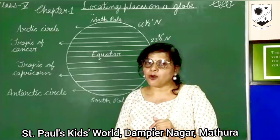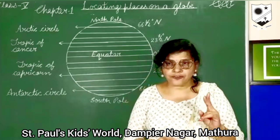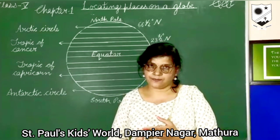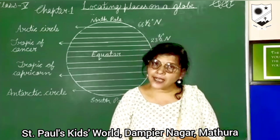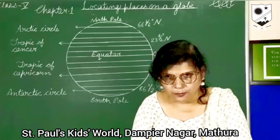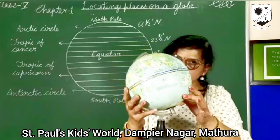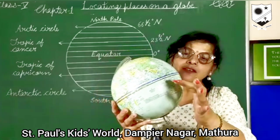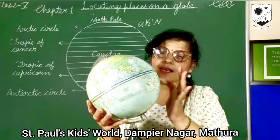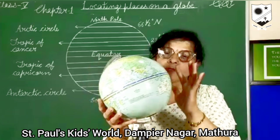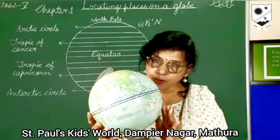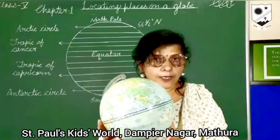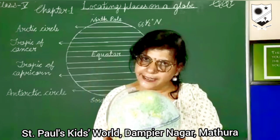This grid is made up of two sets of imaginary lines and they are called latitudes and longitudes. I want to show you these lines on the model of the globe. So see, here are some lines — some light blue lines. Lines which are horizontal, making a circle — these lines are known as latitudes. And the lines which are vertical — these lines are known as longitudes, or we call them meridians.